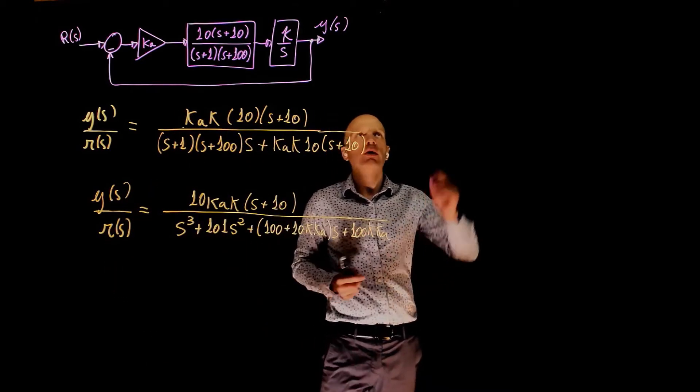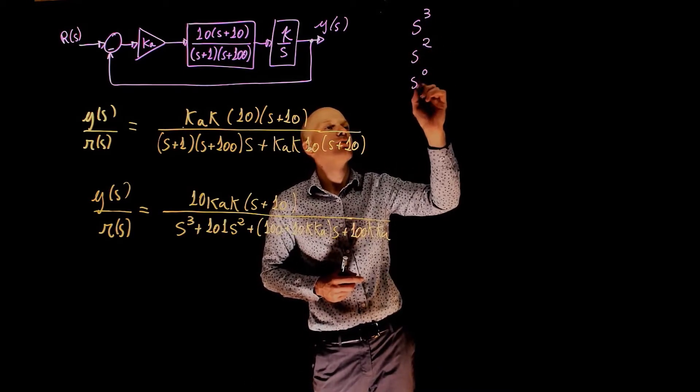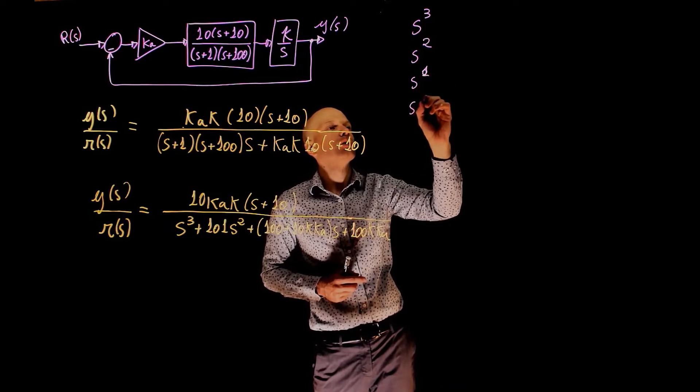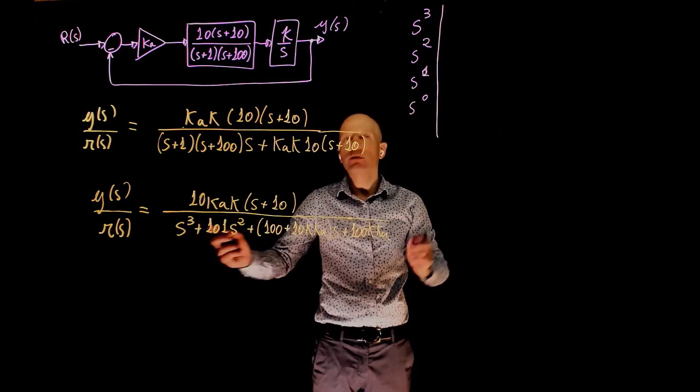This is a third order function, so let's start with s to the power of 3 and go down to s to the power of 0 as usual: s to the power of 1, s to the power of 0. The coefficient of s to the power of 3 is 1.